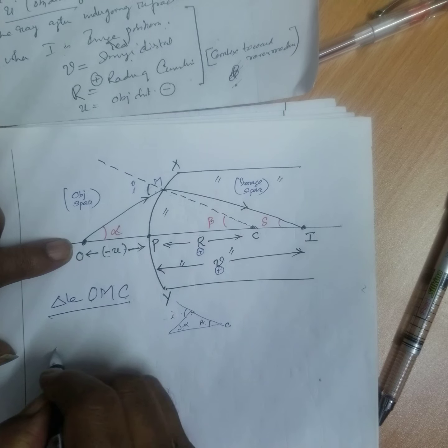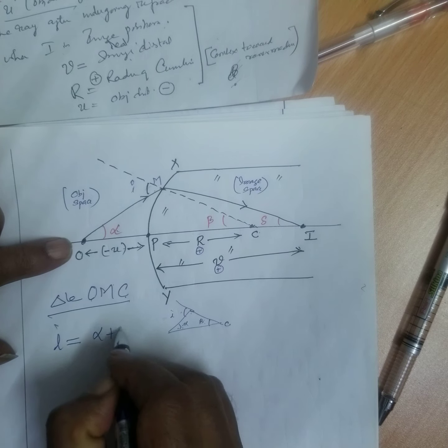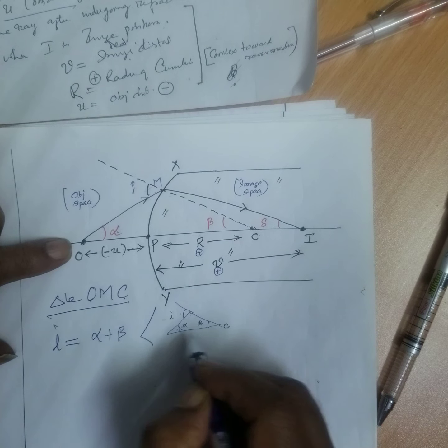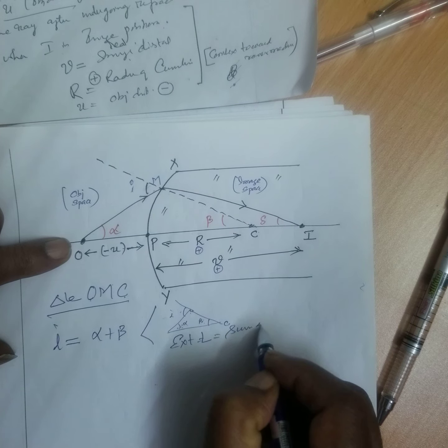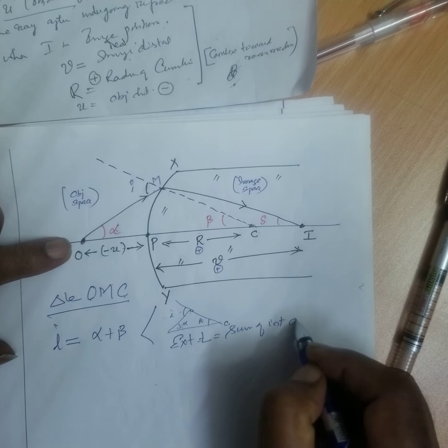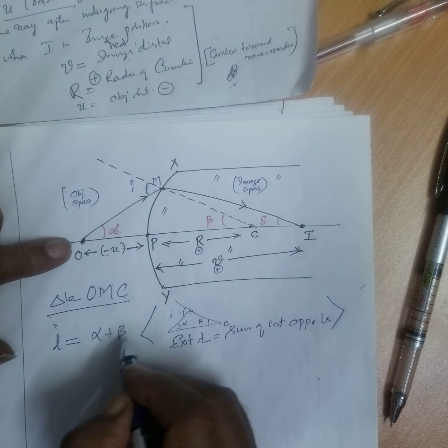Therefore here what I write? I is equal to alpha plus beta. What you have to write here? Exterior angle is equal to sum of interior opposite angles. This is your return.